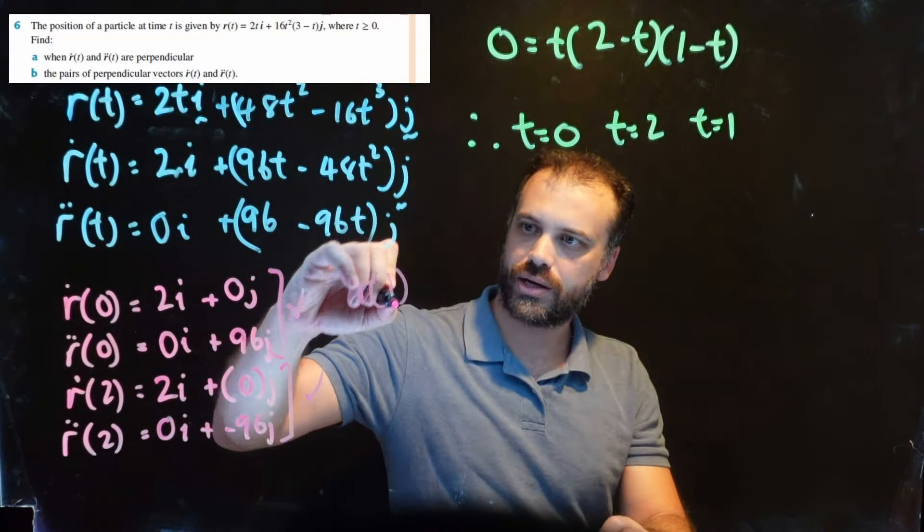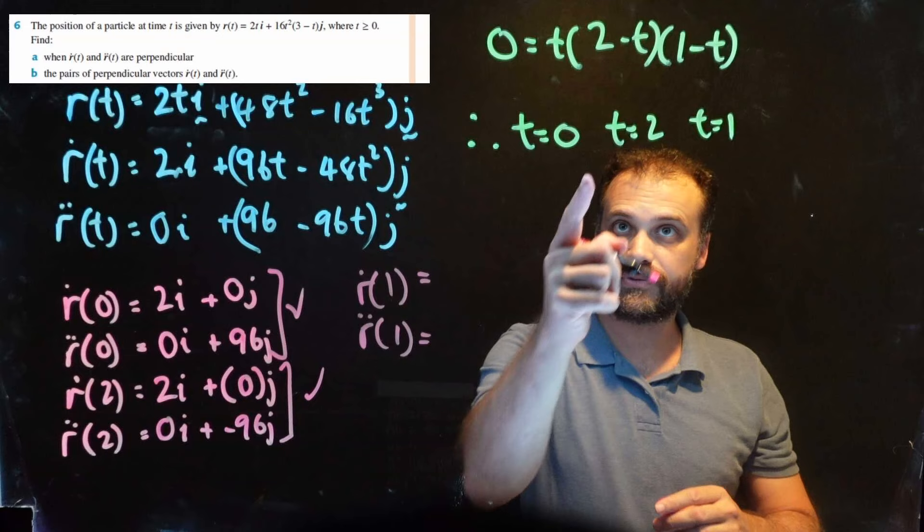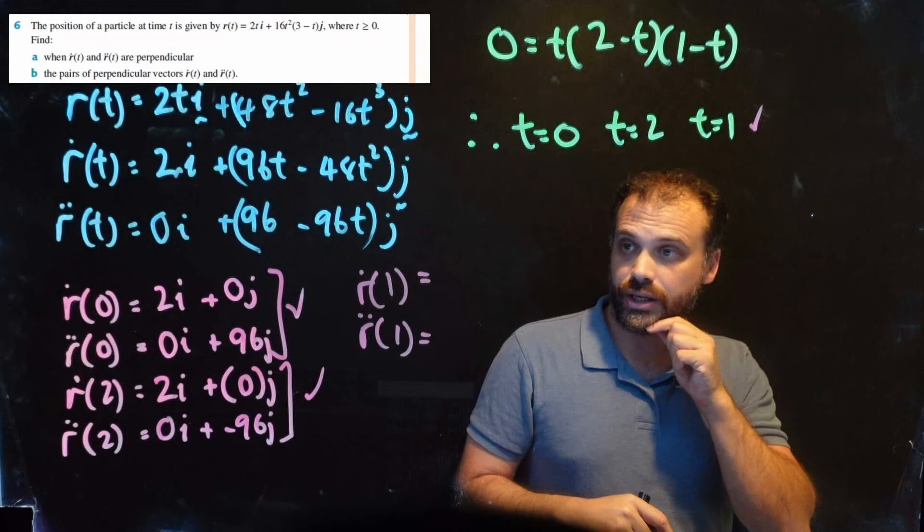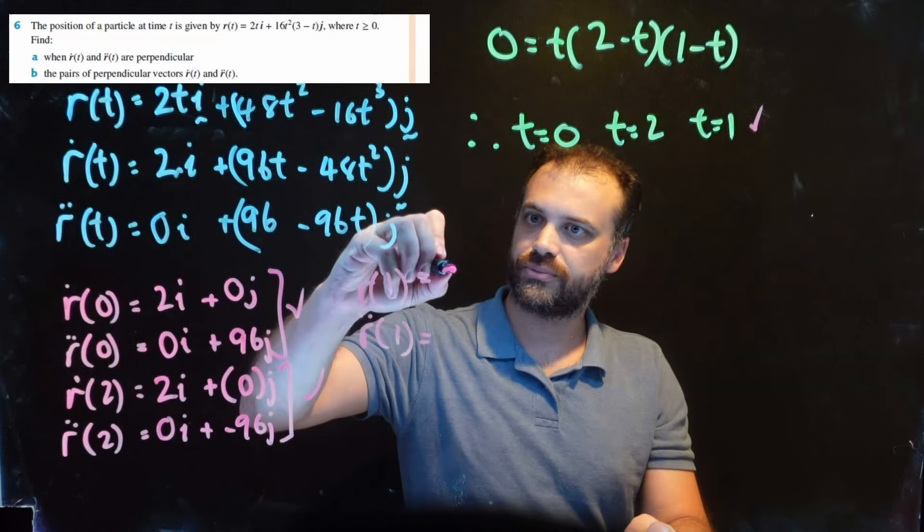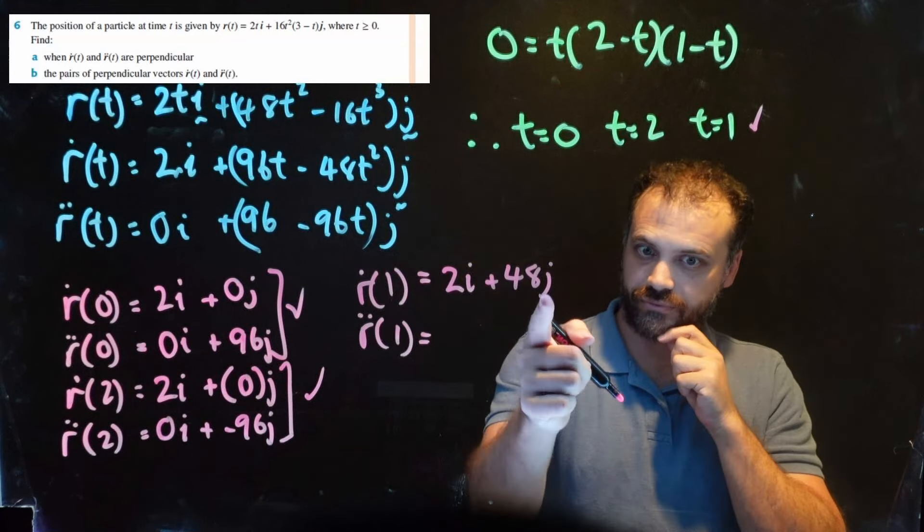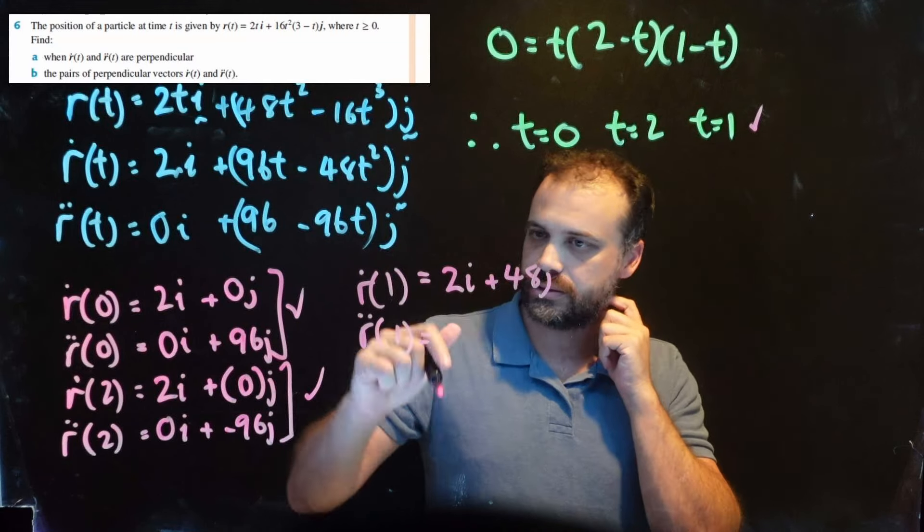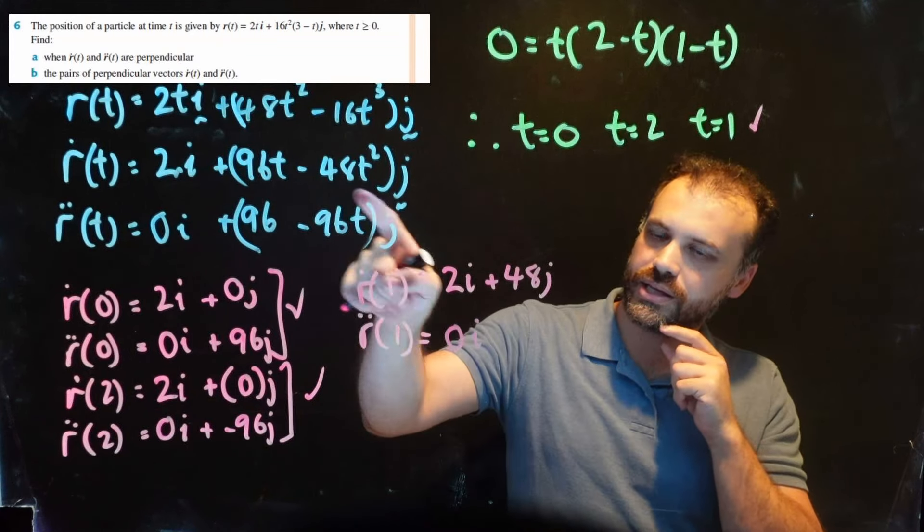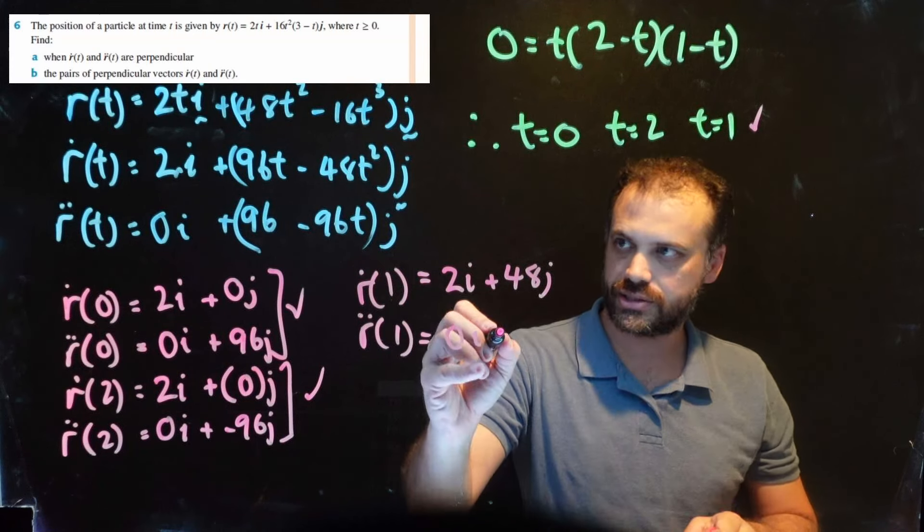Because up until this point, I believed that because we've done our dot product and it says time 1, then they must be at right angles to each other. They're not. Watch this. r'(1): put 1 into 2i, we still get 2i. Put 1 into there, we get 48j. Here, let's put 1 into r''(t). Putting 1 in for t there, we still just get 0i. Putting 1 in here, we get 96 - 96 times 1, which is 96 - 96, which is 0.